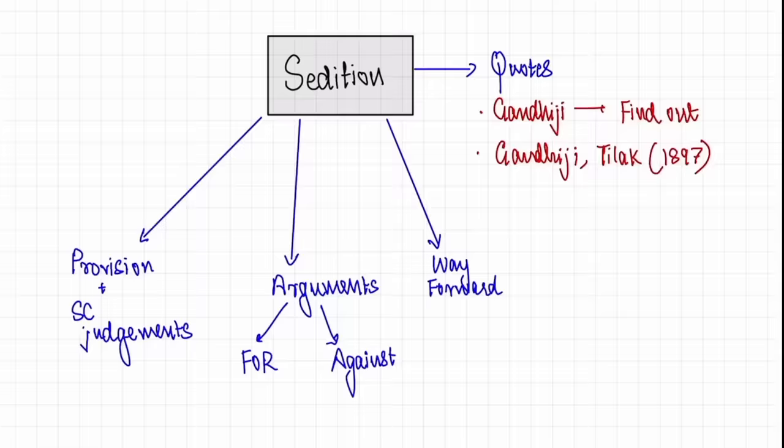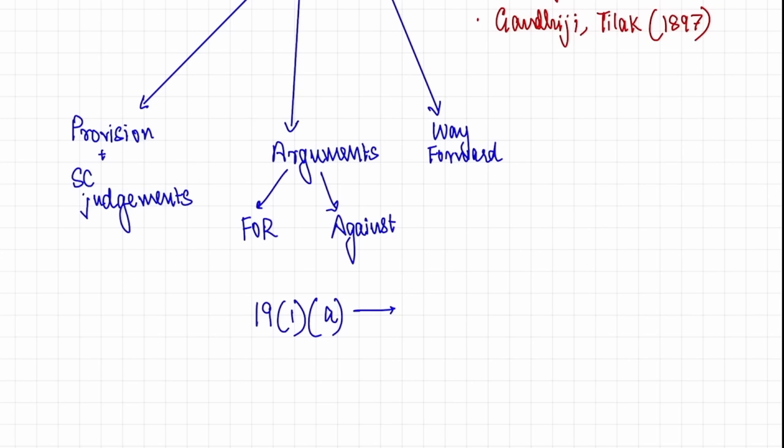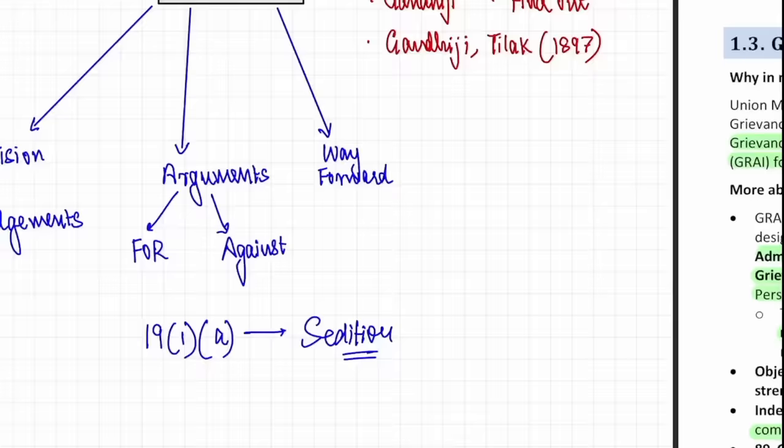When you prepare for mains, Section 19(1)(a) is a very important mains topic. One part of free speech also covers the dimension of sedition and the suppression of free speech and dissent — all of that is now covered. Make notes on it and ensure this is part of your mains preparation. For prelims, you know the relevant facts. Now let's look at the next article: Grievance Redressal Assessment and Index.